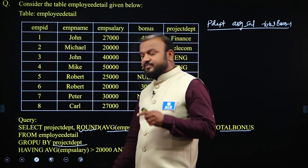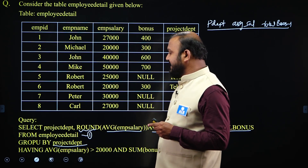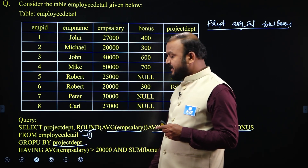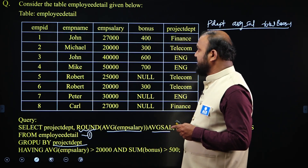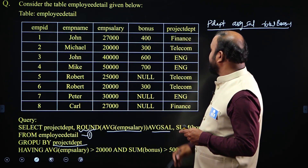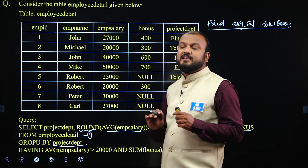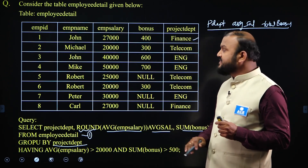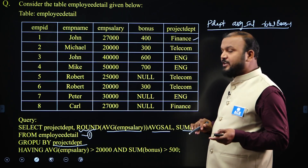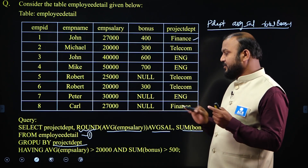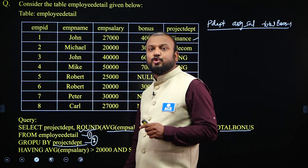Query execution always starts with the FROM clause — this is the first step, and the table data is selected. Next, group by project department divides the table into groups. The project departments here are finance, telecom, and ENG — these are the three project departments. All finance tuples form one group, telecom tuples form one group, and ENG department tuples form one group.